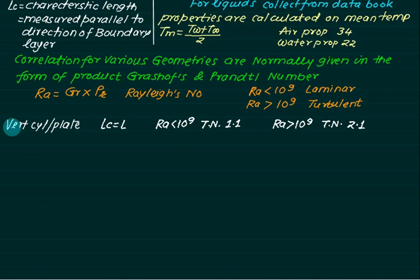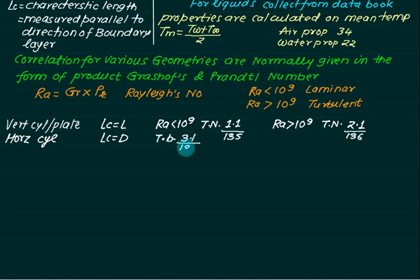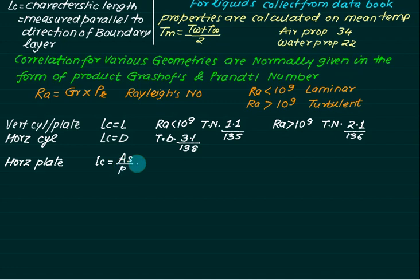For a vertical plate or cylinder: if Ra < 10⁹ use table 1.1; if Ra > 10⁹ use table 1.2.1. For a horizontal cylinder, Lc = diameter D, and there are various correlations for different ranges of GrPr — use table 3.1 on page 136. For a horizontal plate, Lc = surface area / perimeter, and there are two cases: top plate hot/bottom cold, or bottom plate hot/top plate cold. Use table 2.1.1.